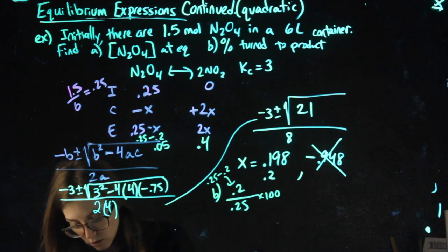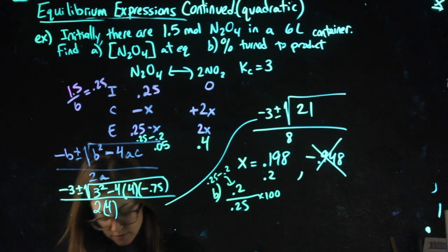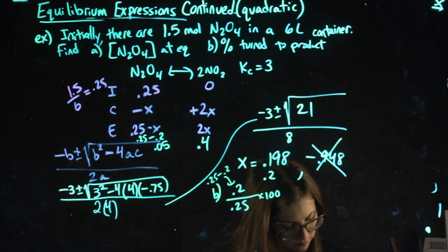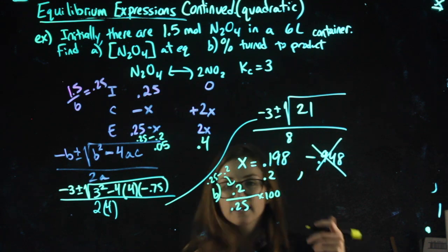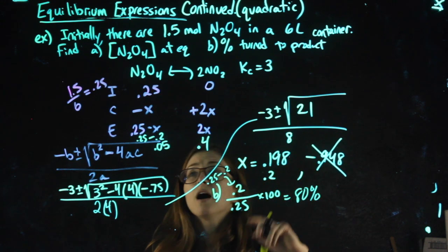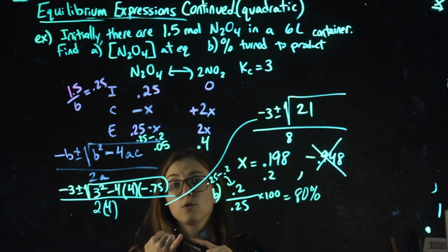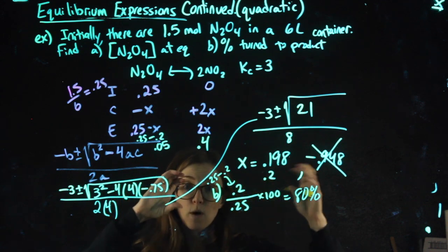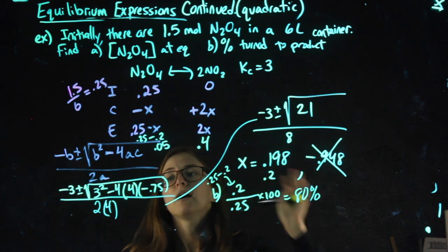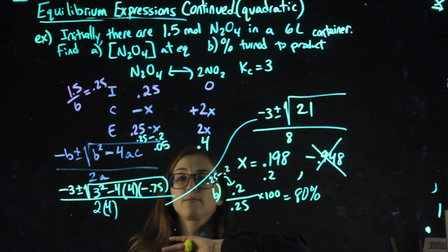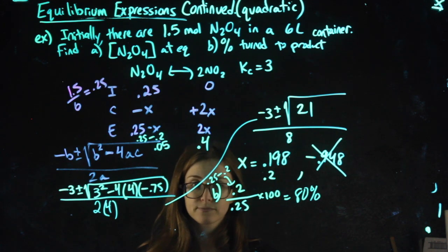So 0.2 over 0.25 gets me 80%. If the math freaks you out, remember most of the points are not for solving. It's for can you get to what you're going to plug into the quadratic? Then it would be separate points for actually plugging it in and the answer. So don't give up.